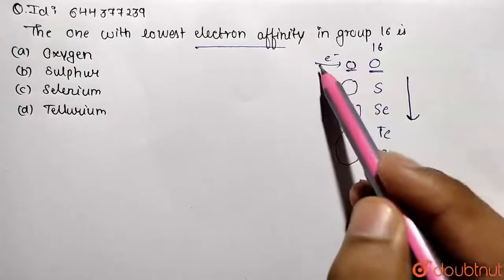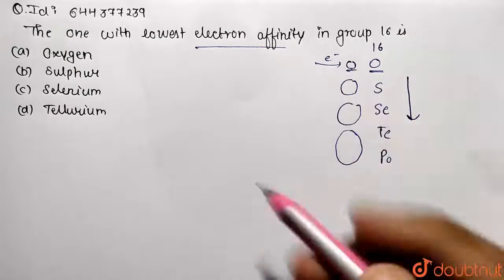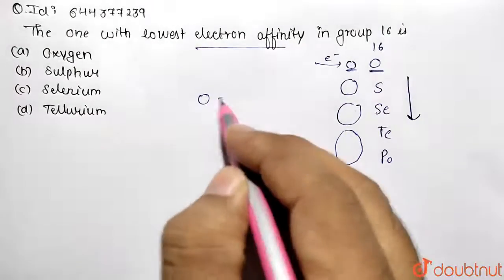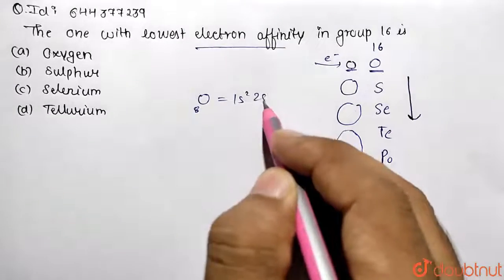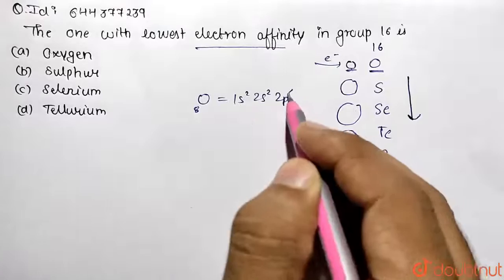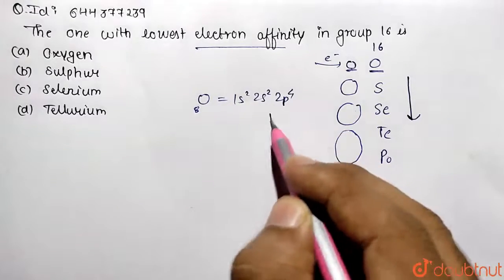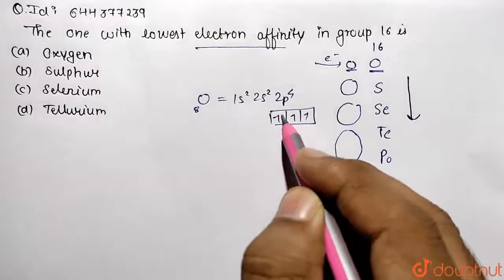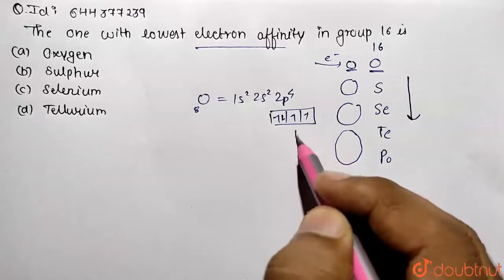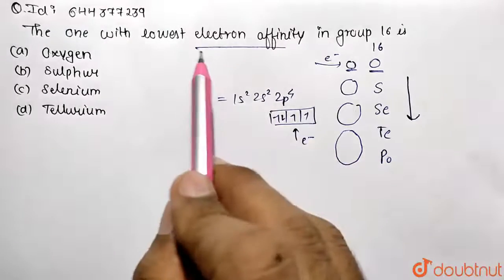If I write the electronic configuration of oxygen, it's going to have atomic number 8: 1s² 2s² 2p⁴. So it is basically short of two electrons to complete inert gas configuration, so it can easily accept an electron. So that is why its electron affinity value is lowest compared to the others.